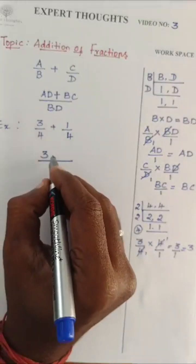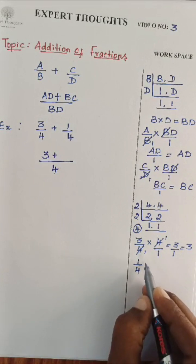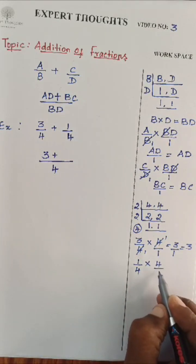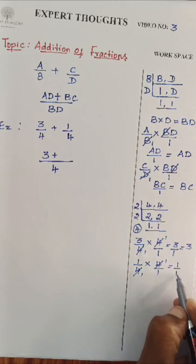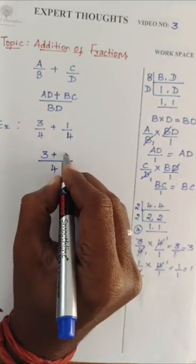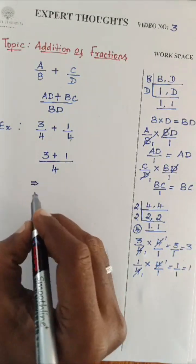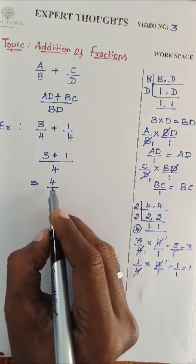Once again, this plus sign as it is. 1 divided by 4 into LCM 4, which is nothing but 4 divided by 1. 4 ones are. 1 divided by 1 is nothing but 1. So, this particular term becomes 3 plus 1, 4 divided by 4.